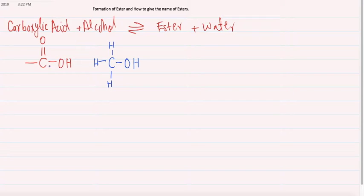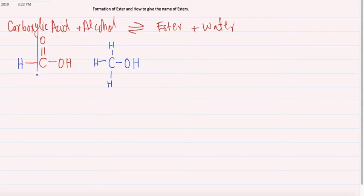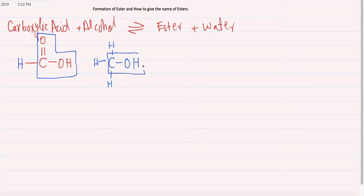We have two reactants: first is carboxylic acid and the second one is alcohol. You have to identify the functional group — C double bond O and OH is the carboxylic acid functional group, and OH directly attached to carbon is the alcohol functional group.